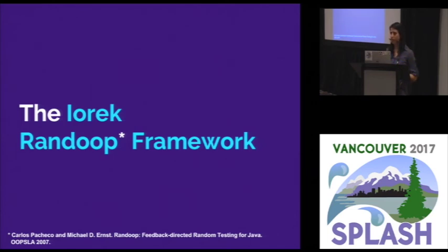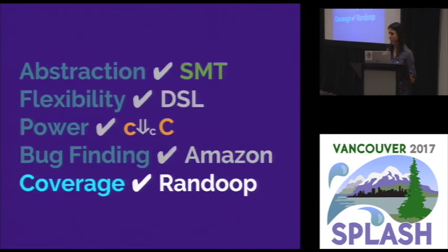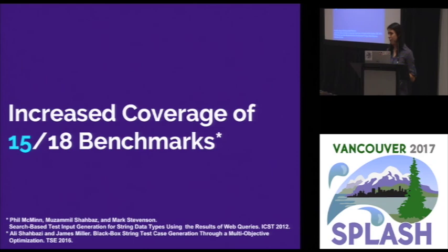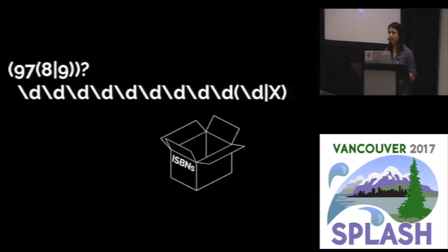And it will then use those inputs to guide its test generation. So we built this sort of Yorick enhanced Randoop, where we use Yorick to generate a bunch of inputs, which we saved into this file. And then we would run Randoop with the file, and it would use those inputs to guide the test that it generates. And we found that this increased coverage over Randoop alone, also this enhanced version of Randoop. And this was true on 15 of 18 benchmarks from a suite of string benchmarks from prior work. And this is line coverage.